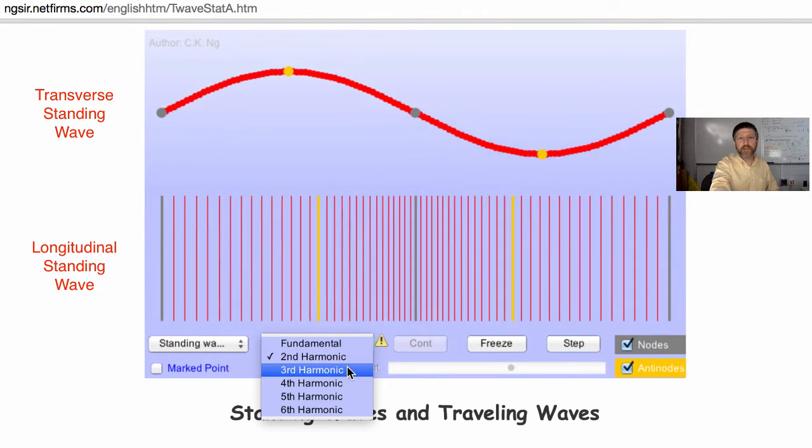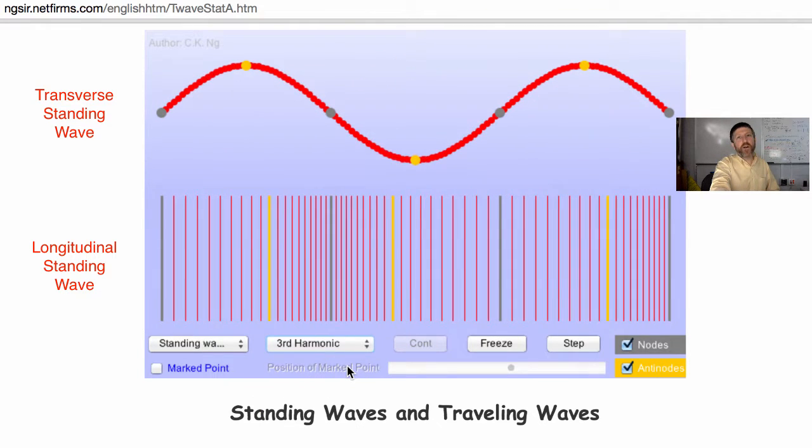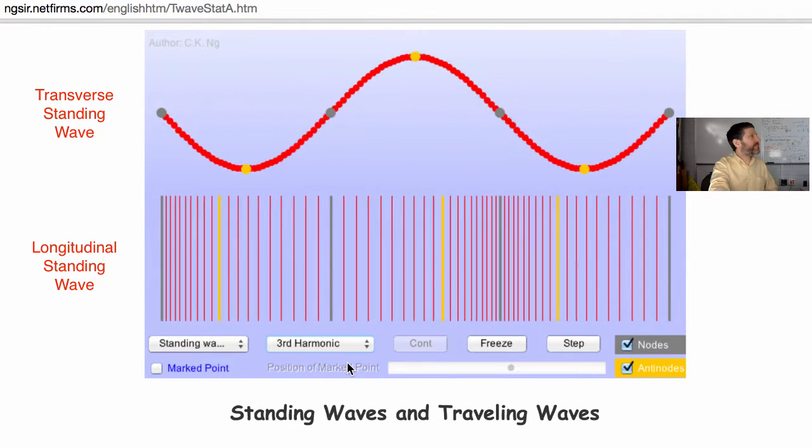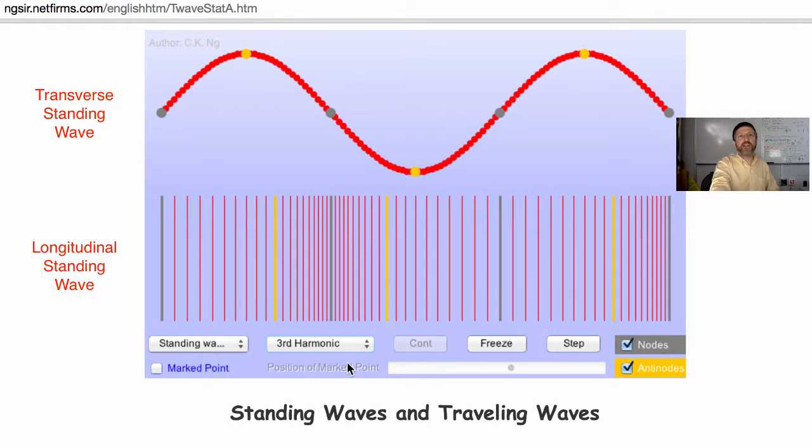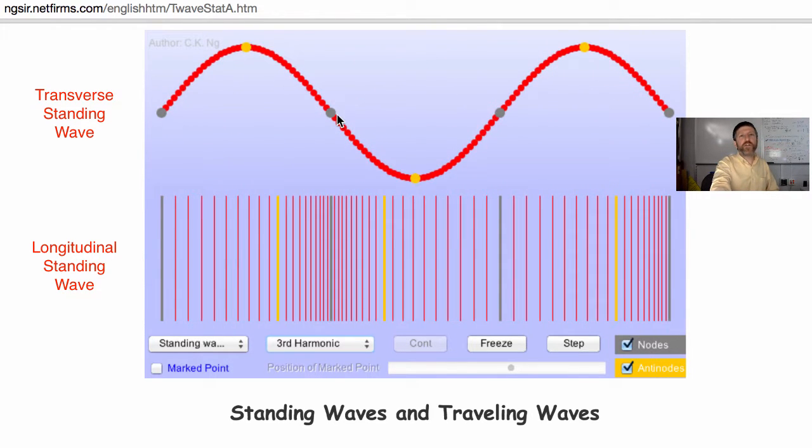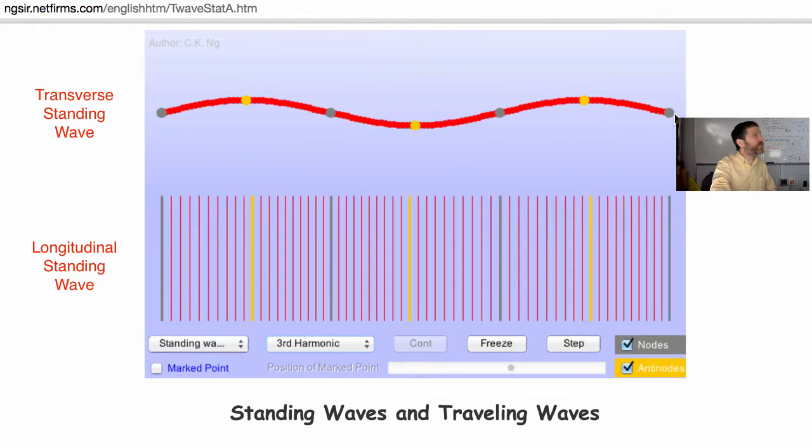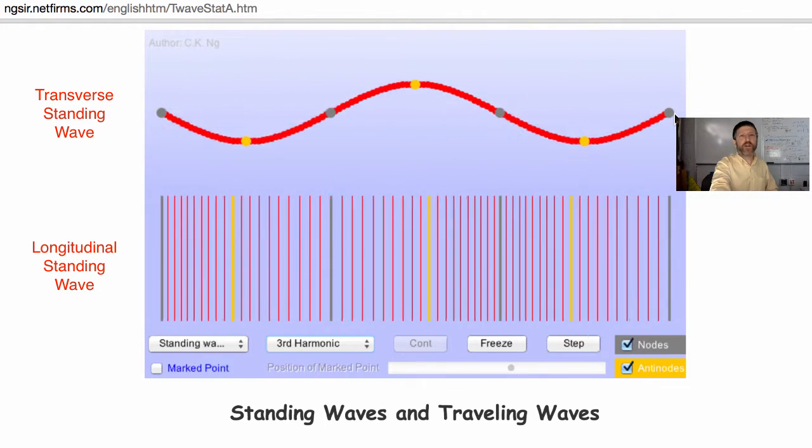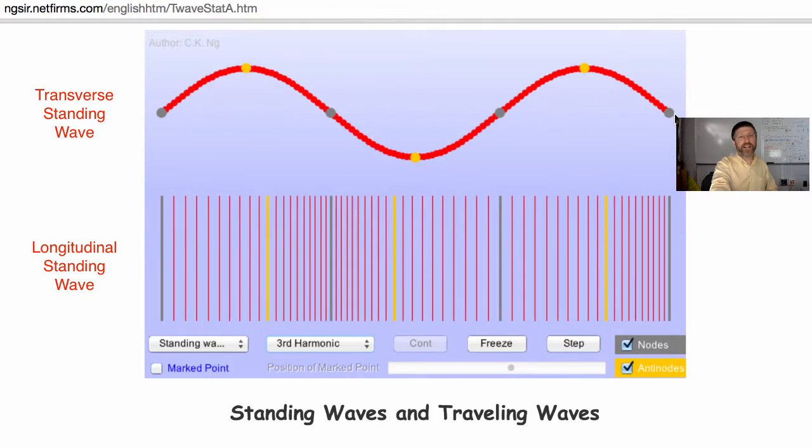Let's try the third harmonic. And there are how many antinodes on this? Three antinodes. How many nodes are there? Notice there's one, two, three, four nodes. So don't count nodes for these. You're going to count antinodes to figure out the harmonic number.